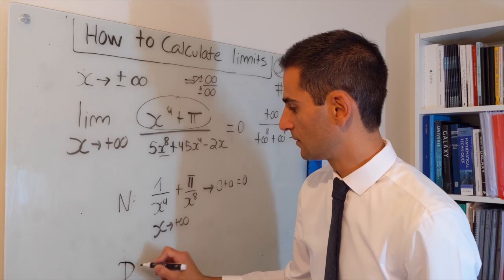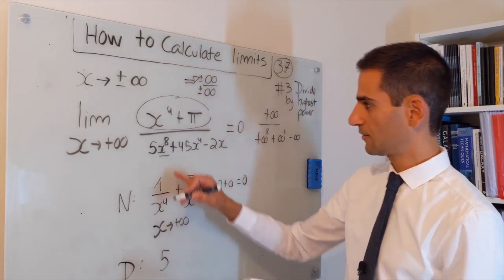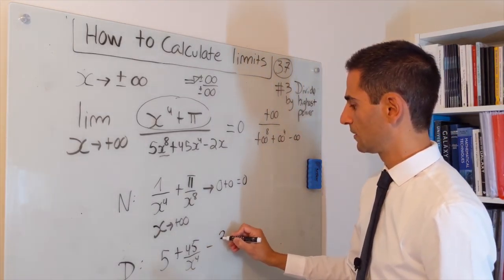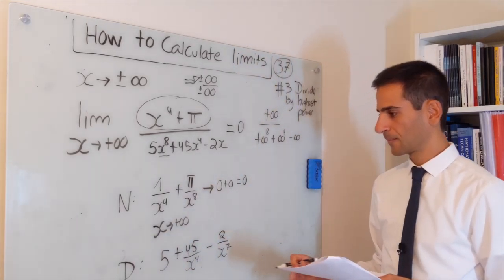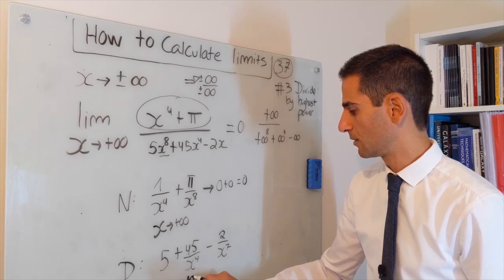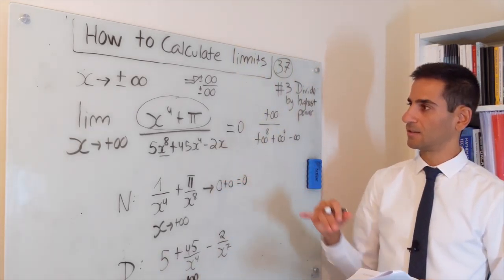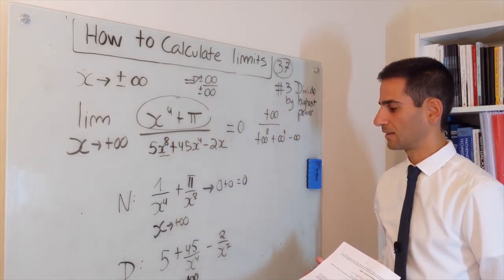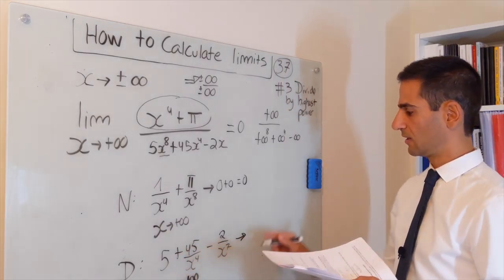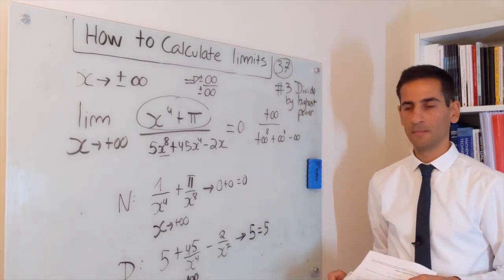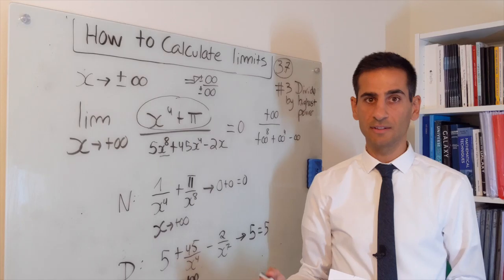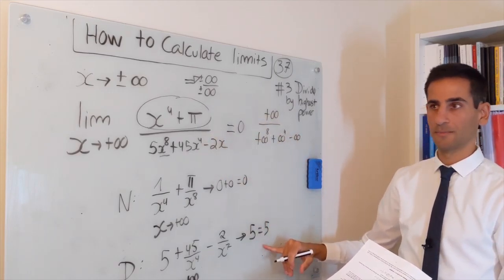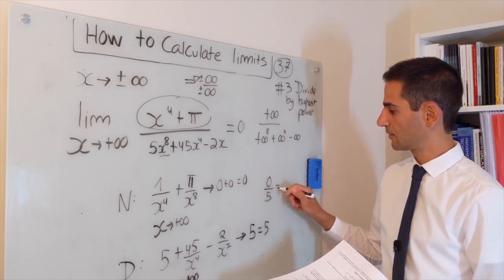So when x tends to infinity, the numerator once divided by the highest power x⁸ goes to zero. For the denominator, we're looking at 5 plus 45 over x to the power of four minus 2 over x to the power of seven. When x goes to plus infinity, this denominator, once divided by x⁸ — and this works because you're dividing by x⁸ on top and bottom so the net effect cancels out — will go to 0, 0, and 5, giving 5.